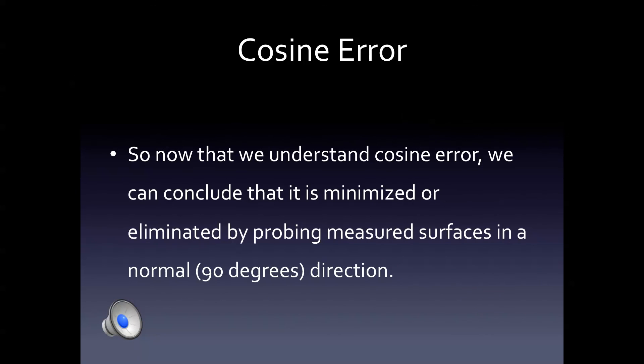So now that we understand cosine error, we can conclude that it is minimized or eliminated by probing measured surfaces in a normal or 90 degree direction.